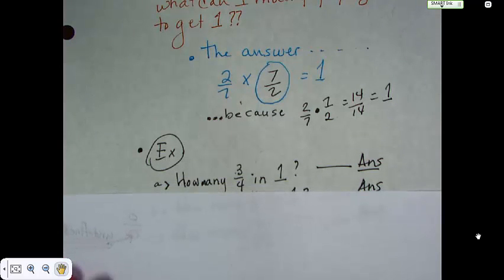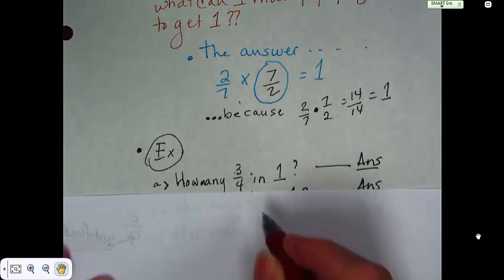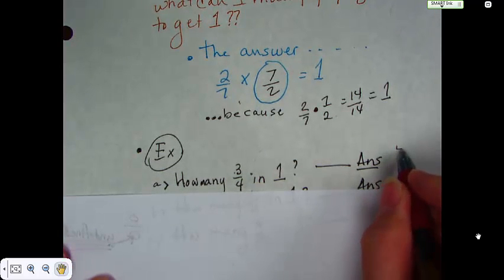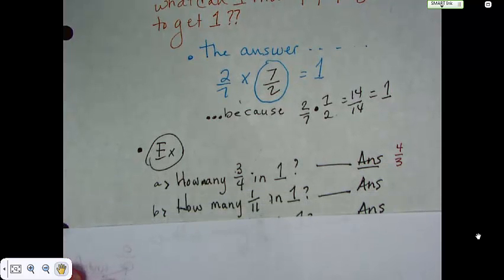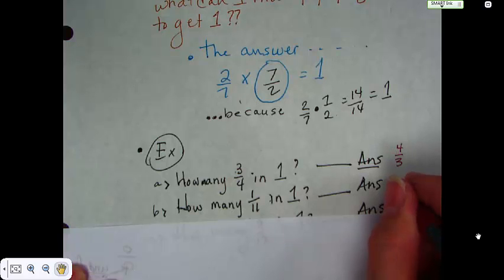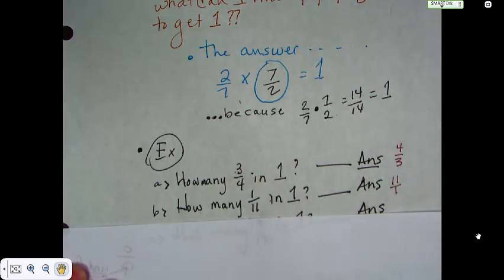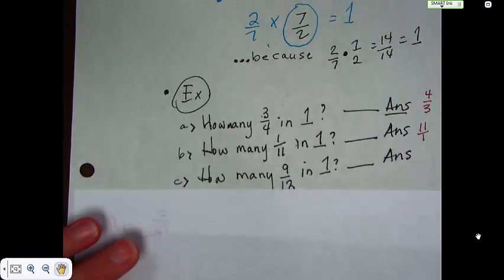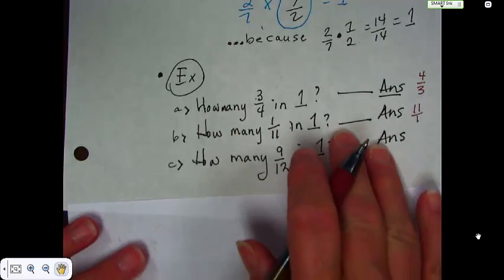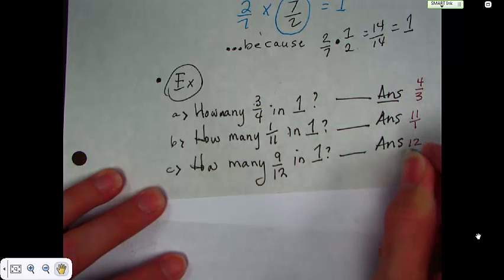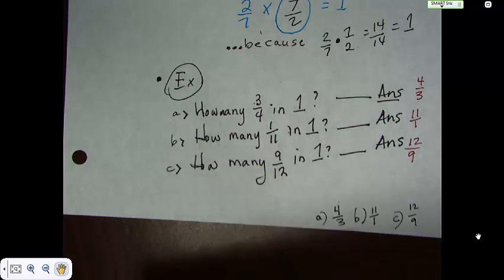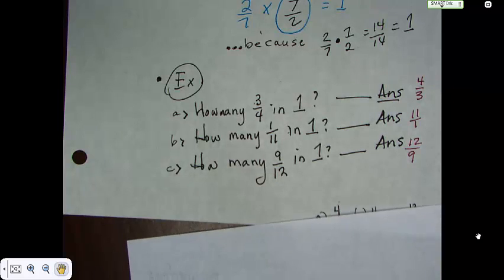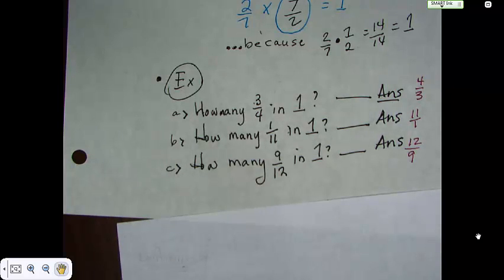Let's just do a few examples. How many 3 fourths are in 1? Yeah. 4 thirds. How many 1 elevenths are there in 1? The answer is 11. Or you could write 11 over 1 if you want to. Okay. How many 9 twelfths are in 1? Well, there are 12 ninths. Okay. And, of course, I have the answers down at the bottom. But we answered these questions.